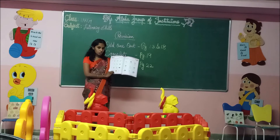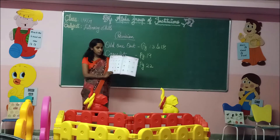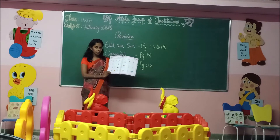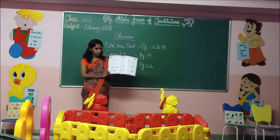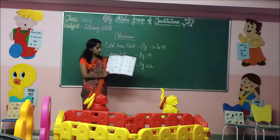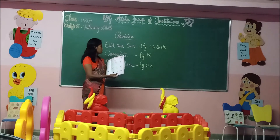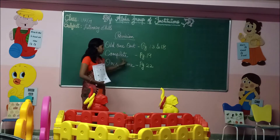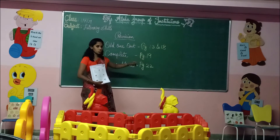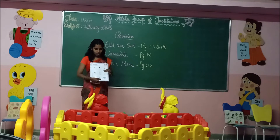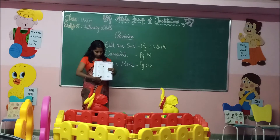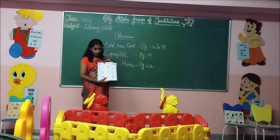Have you all understood this concept? You only have to circle the word for the given alphabet. Now we shall go on to the next topic: 'Complete.' Page number 19.